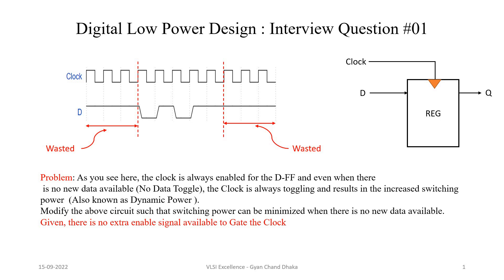Here we are given a small circuit of a D flip-flop, and as you can see in the waveform, the clock is always enabled for this D flip-flop even when there is no new data available. The input data to the flip-flop is constant during certain time intervals, but the clock is toggling even during those times.